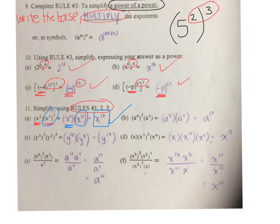For question B, the first step is to simplify the power of a power. 4 times 2 is 8. Then take a to the power of 8 and multiply it by a to the power of 5. Add the exponents: 8 plus 5 is 13.